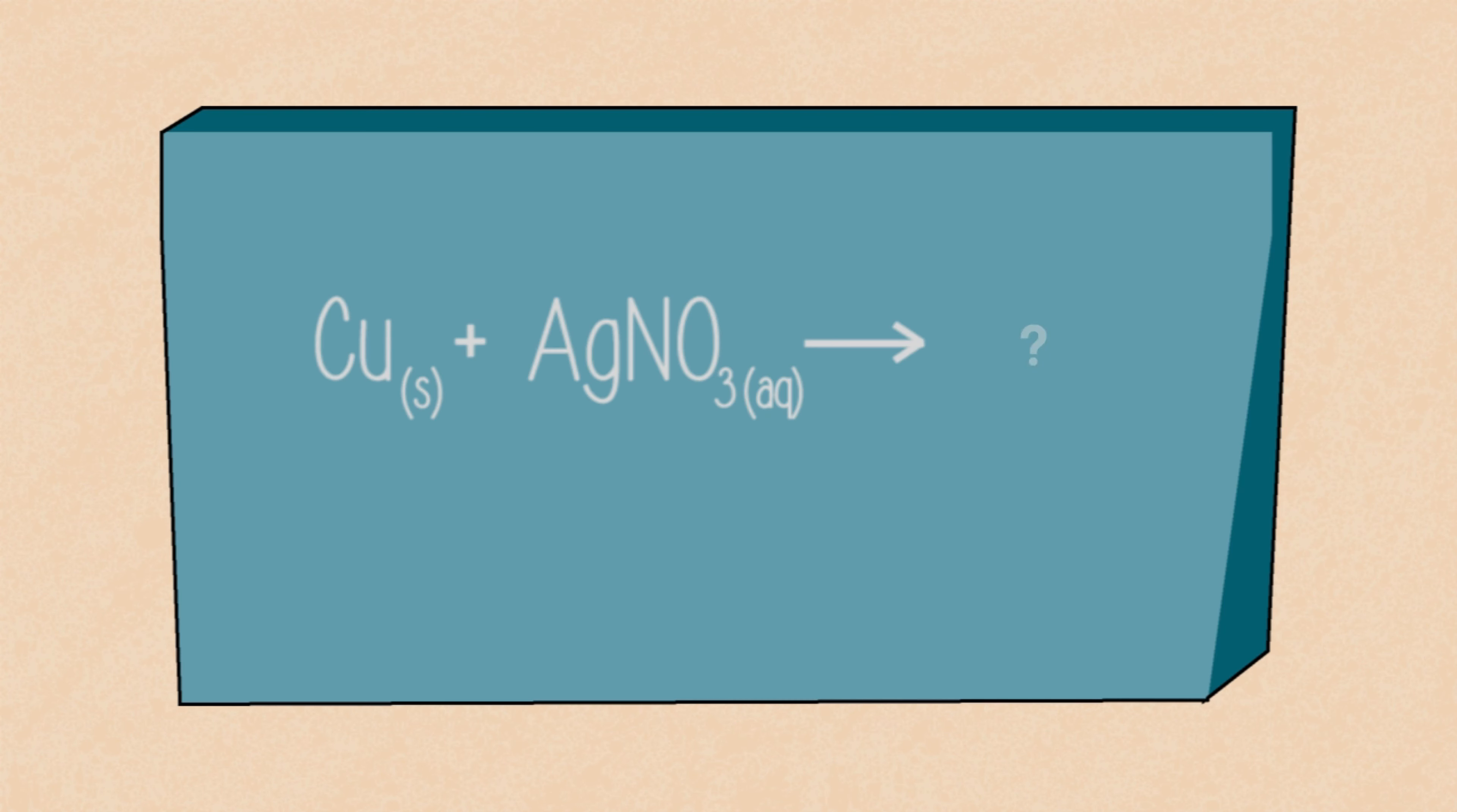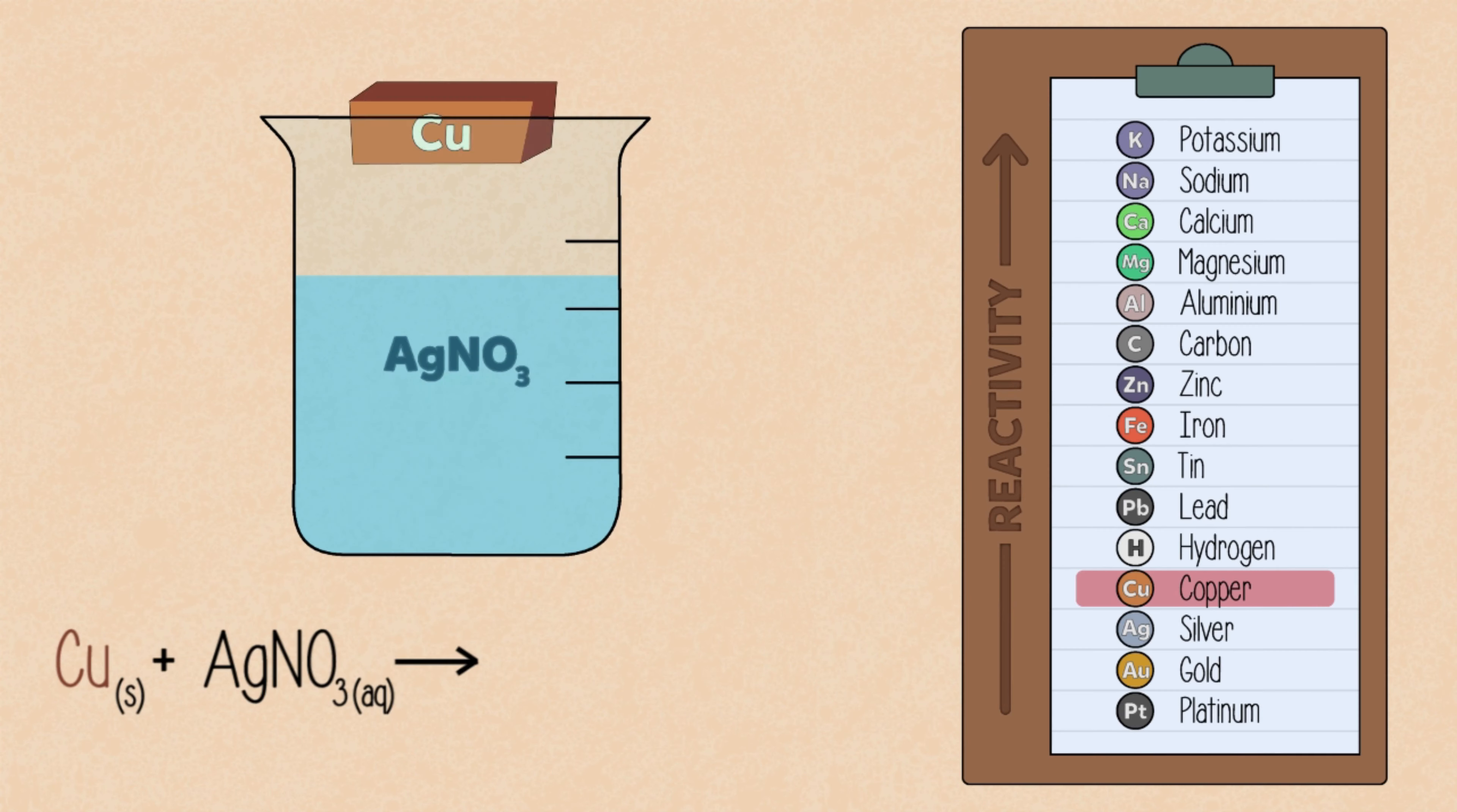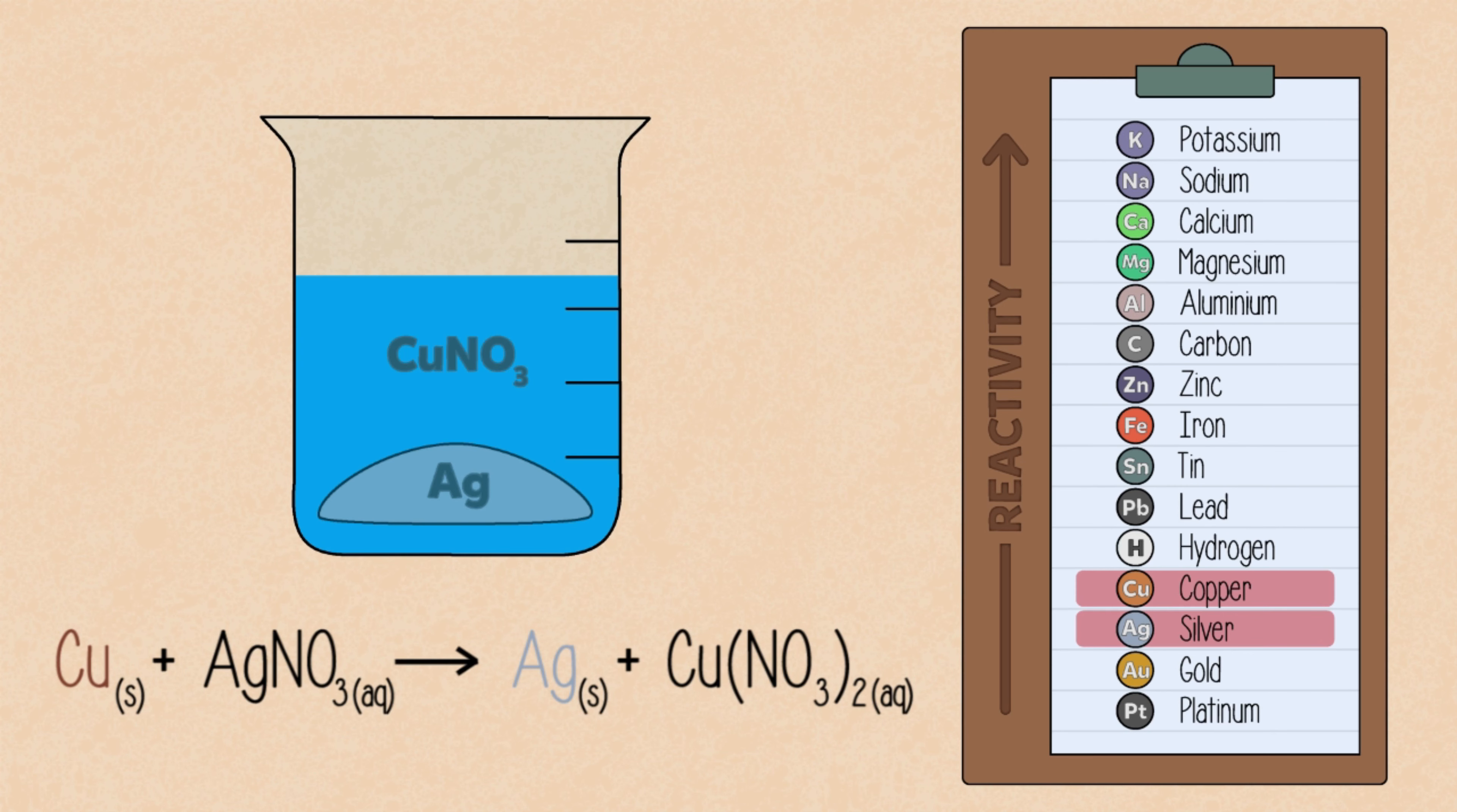Can you predict the products from this single displacement reaction? Pause the lesson and continue when ready. As copper is more reactive than silver, it can displace silver in silver nitrate, producing silver metal and aqueous copper nitrate.